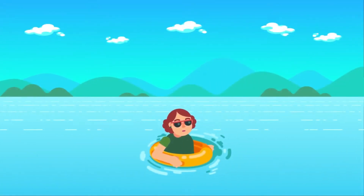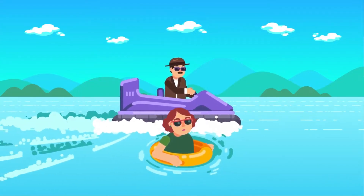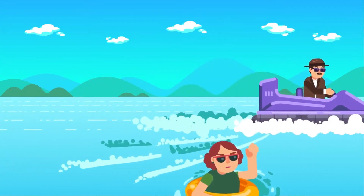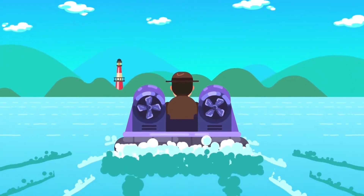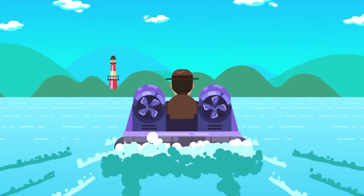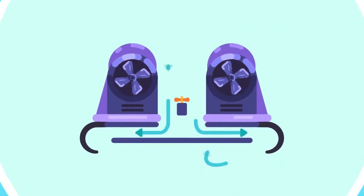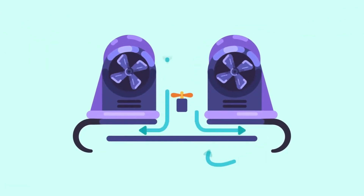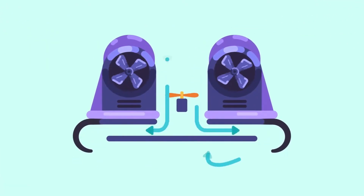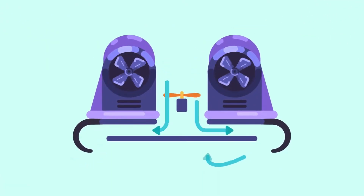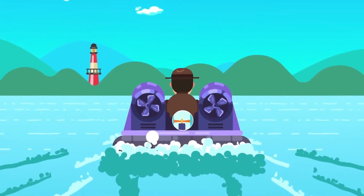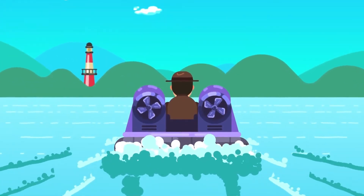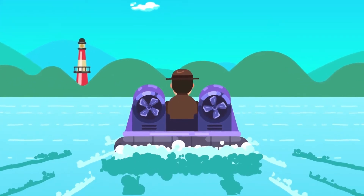Air cushion. We can ride a hovercraft over the ground, water, and nearly any kind of surface. The hovercraft has a set of fans that blows air downwards continuously, creating a cushion of air that lifts the deck and minimizing the friction between the hovercraft and its terrain.